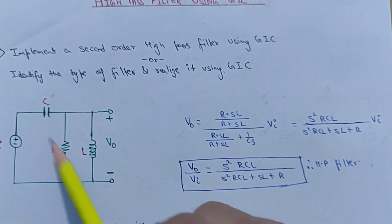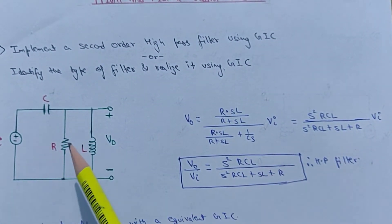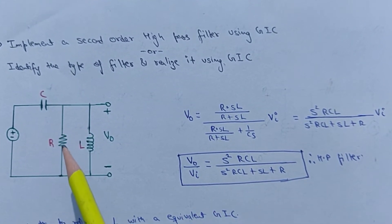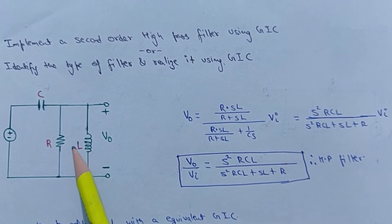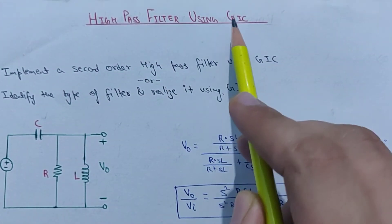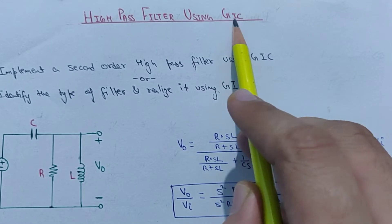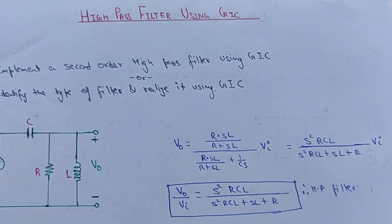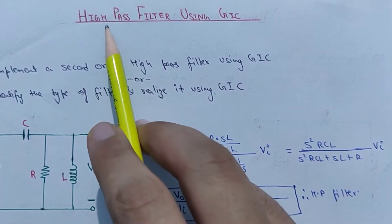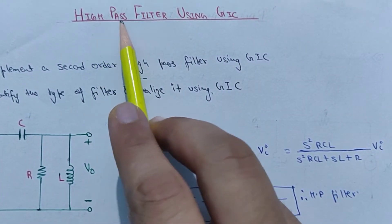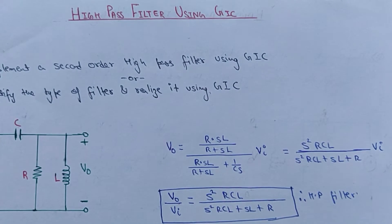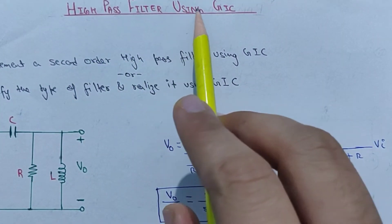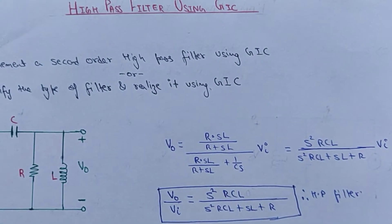To learn all these types of configurations, I have provided a link in the description to Sedra & Smith — you can refer to chapter 12, page 1108. I have already discussed the basics of the generalized impedance converter; if you haven't watched that video, check out the link in the top right corner. If you want to watch the video on low pass filter using GIC, or band pass filter using GIC, check out those links as well.